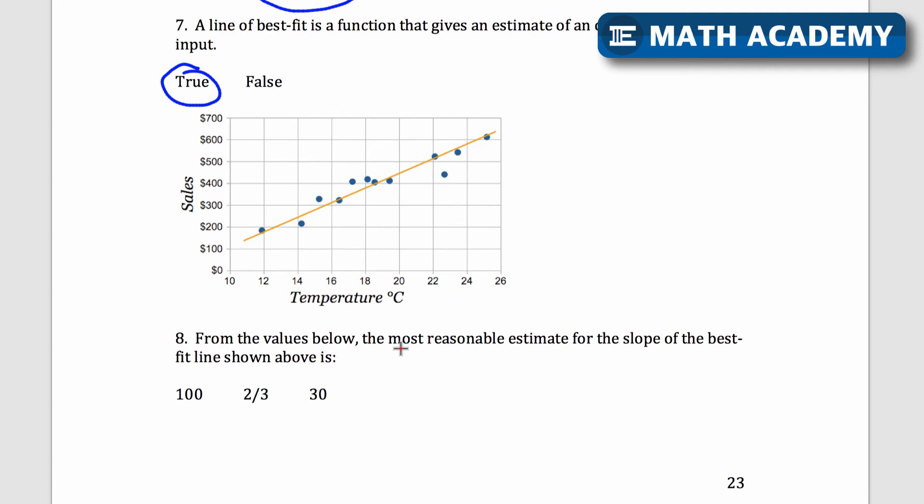Number 8. From the values below the most reasonable estimate for the slope of the best-fit line shown above is. Again I'm going to check the scale. So let's see, oh it starts at 10 suddenly. 10, 12, 14, 16. Okay this is going up by 2. Vertically it goes up by 100. They're asking for an estimate for the slope. Well slope is rise over run. So I'm going to do this. I'm going to pick two points that are far apart. The farther apart they are even though there's a little bit of an error in maybe the height or my horizontal value, the x value.